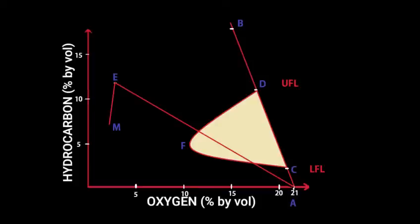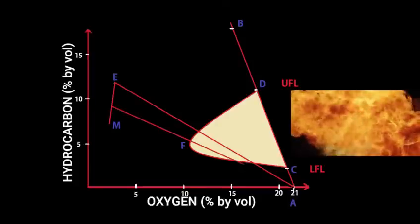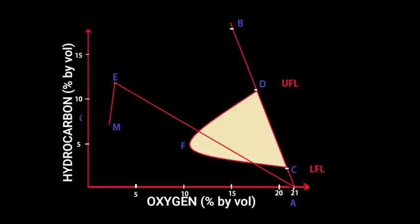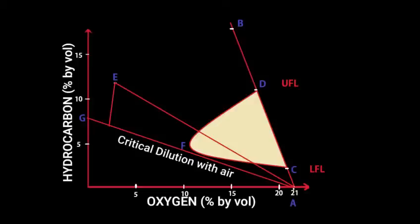If we stop purging at any point between E and M and start gas-freeing from the point, then it passes through the flammable mixture. Therefore, we have a line GA called critical dilution limit. The line GA passes by just stretching the flammable range portion of the diagram. Thus, critical dilution limit is the minimum amount of purging required to ensure that the mixture does not fall in the flammable range while diluting with air.